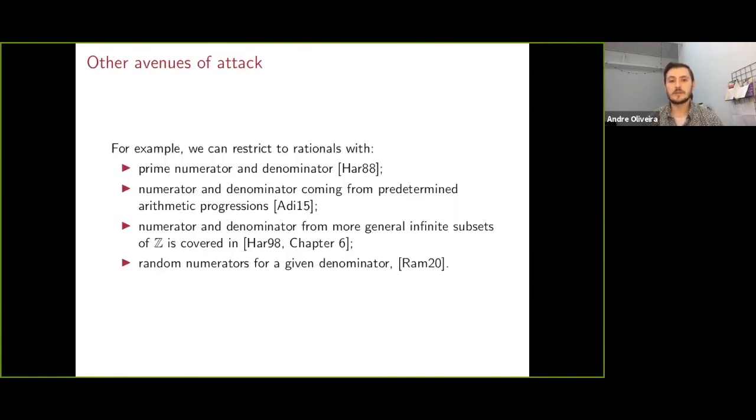For example, what if we try to restrict the rationals where the numerator and denominator are prime, or if they come from some arithmetic progressions or some more general subsets of integers, or even what if we look at rationals that are randomly chosen in some sense? All of these contexts have been studied and have Khinchin-type theorems.